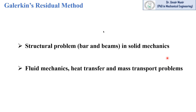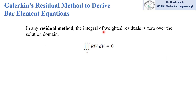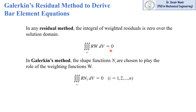The Galerkin residual method is used to solve structural problems in solid mechanics, fluid mechanics, heat transfer, and mass transfer problems. In any residual method, the integral of weighted residuals is zero over the solution domain. We have this expression from our previous lecture on weighted residual methods, in which we defined the R function as the residual or error function. If we integrate it over the whole solution domain, its integral will be equal to zero. Specifically in Galerkin's method, the shape functions are chosen to play the role of the weighting function.